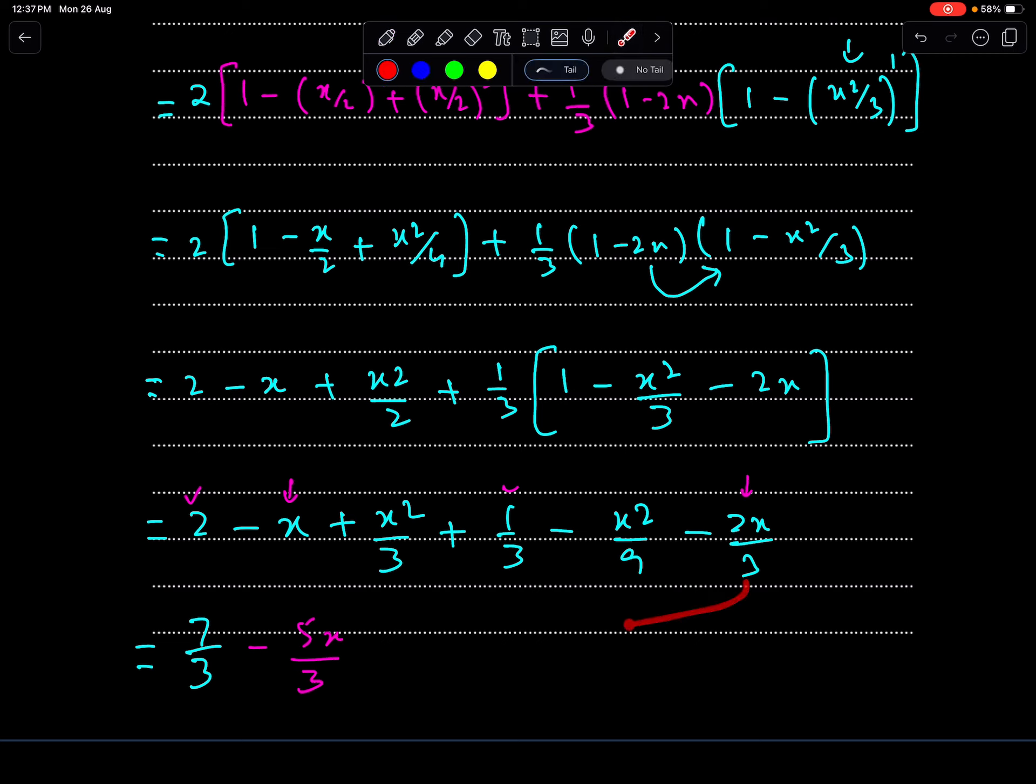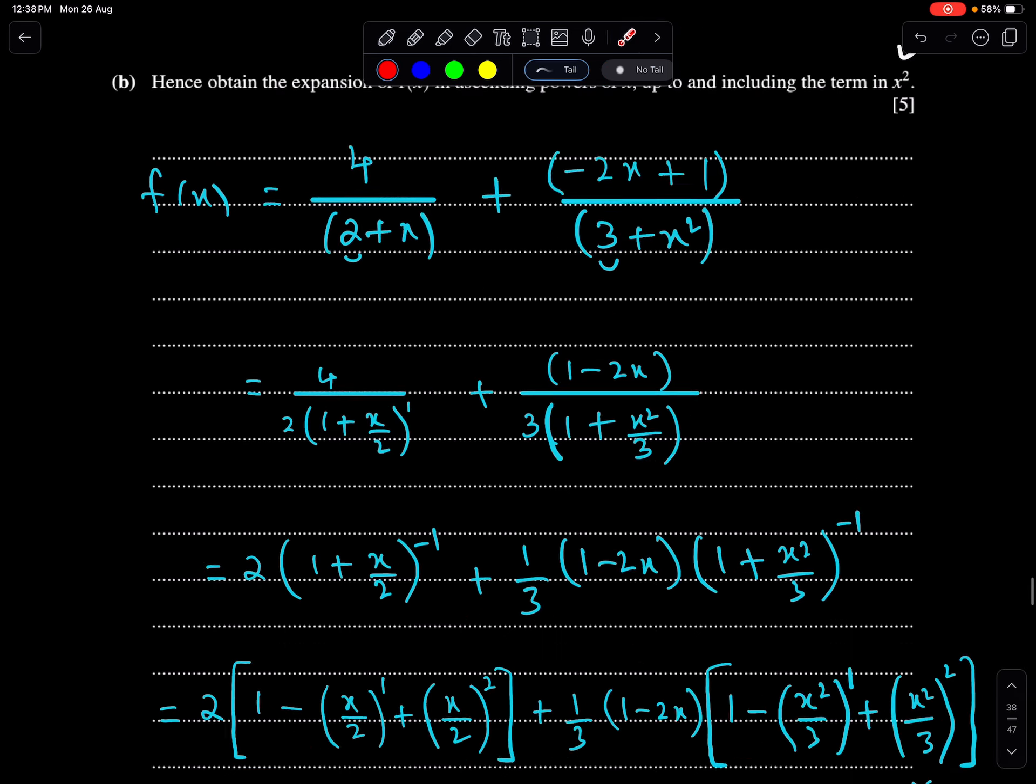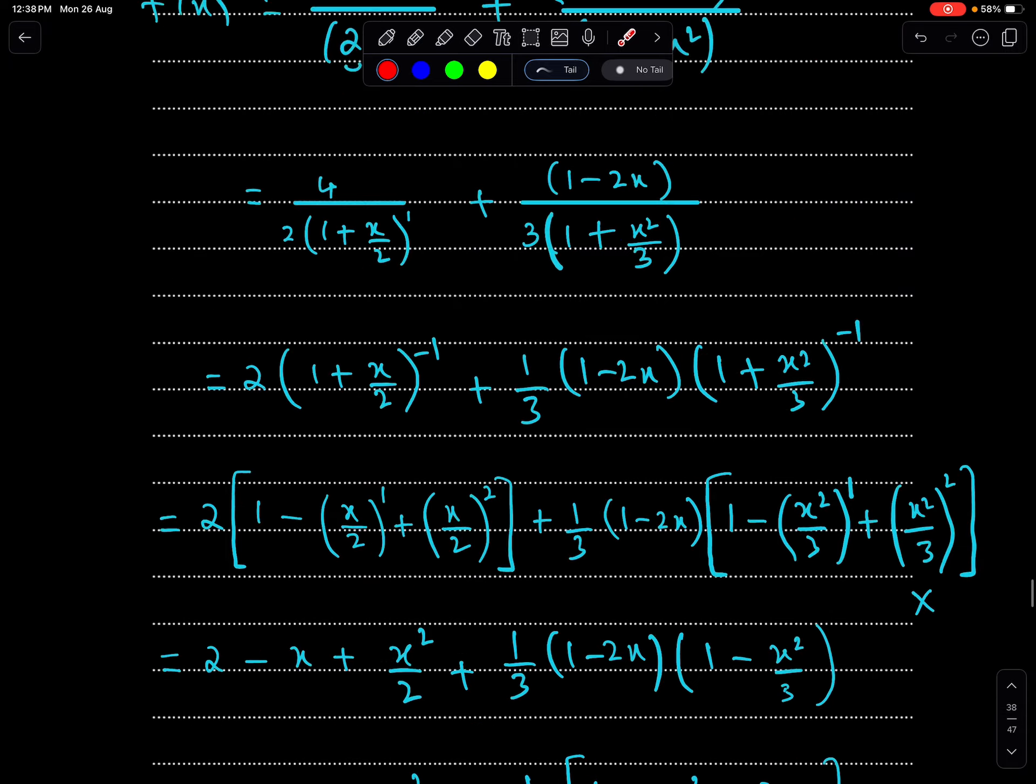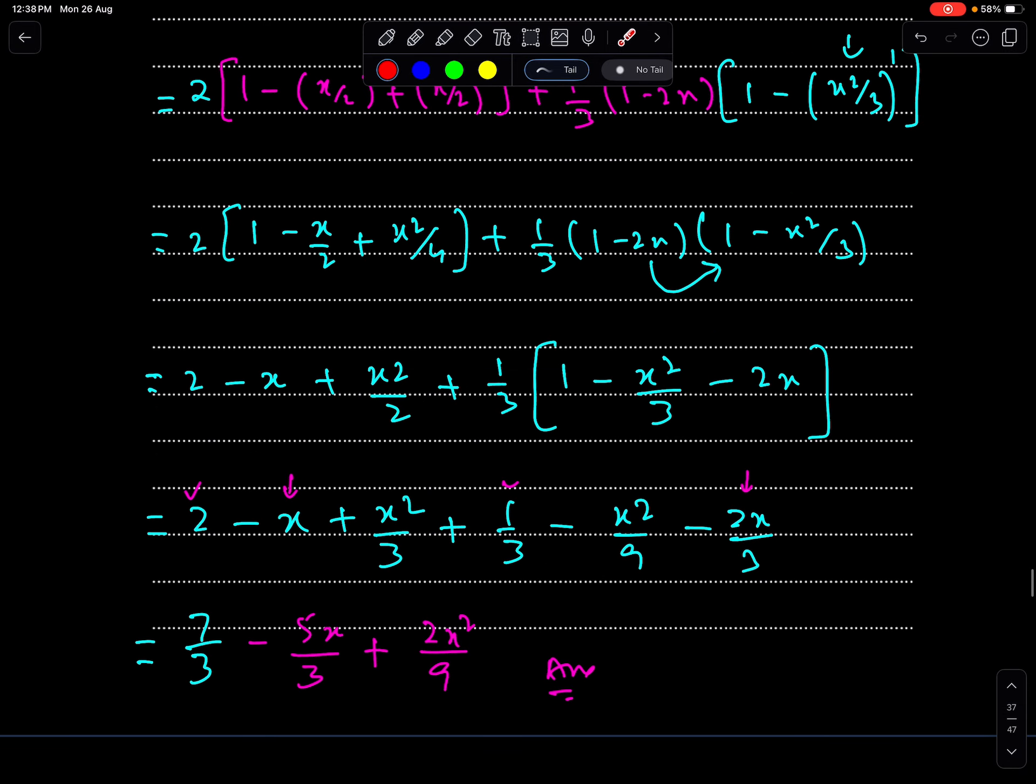So, even the 3, and minus 2 minus 5. Now, check the x square term. So, 9 is the LCM, so 3x square, and minus x square, so 2x square, positive. So, this is the expanded form of f of x, up to and including the term in x square. 7x square upon 18.